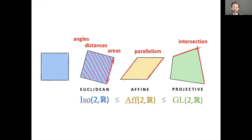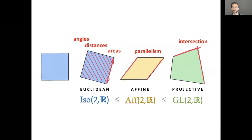Once you define a symmetry group — the class of transformations you apply — you immediately have certain structures that are preserved. In Euclidean geometry, with rigid motions, areas, distances, and angles are preserved. With the affine group, parallelism is preserved but not distances. Projective geometry is the broadest, and the relations are clear because the affine group is a subgroup of the projective, and Euclidean is a subgroup of the affine.